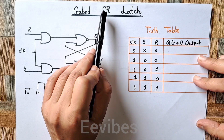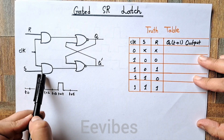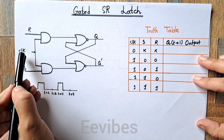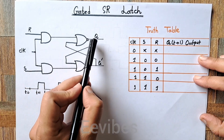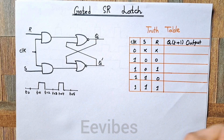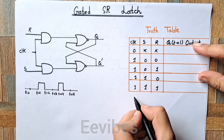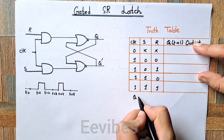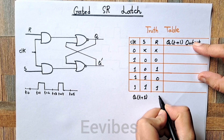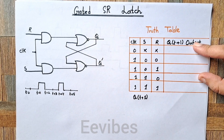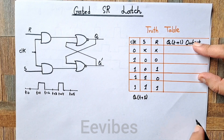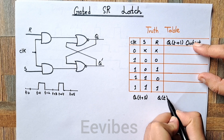In this gated SR latch there is a set and reset input, while the clock signal will be acting as a gated input signal. Here you can see that two outputs are Q and Q complement, which are basically the opposite of each other. The next state of the output is represented by Q(t+1), and since this is a latch element it must have stored a certain value — the current state is represented by Q(t).